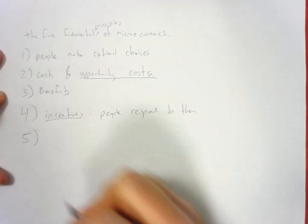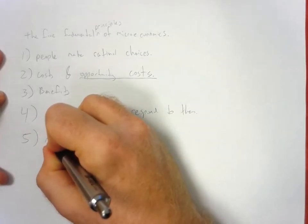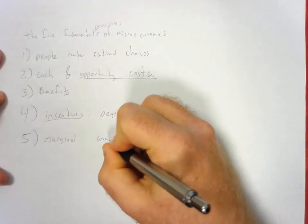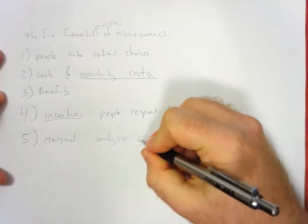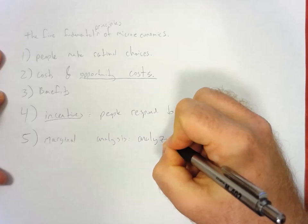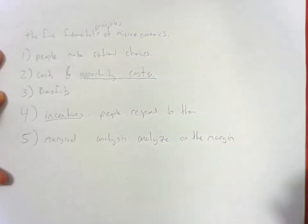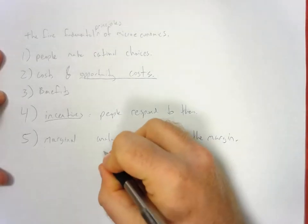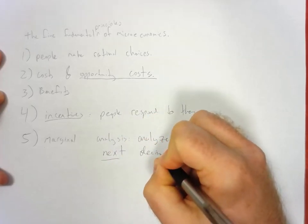Finally, five, and probably the second most difficult concept to think about, is the idea of marginal analysis. So, in economics, we like to analyze things on the margin. What does that mean? When we analyze things on the margin, what we're looking at is that next decision or choice.